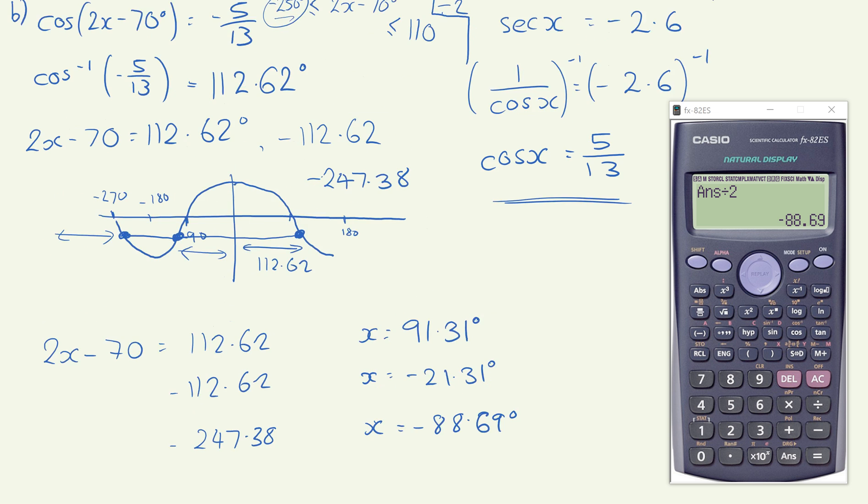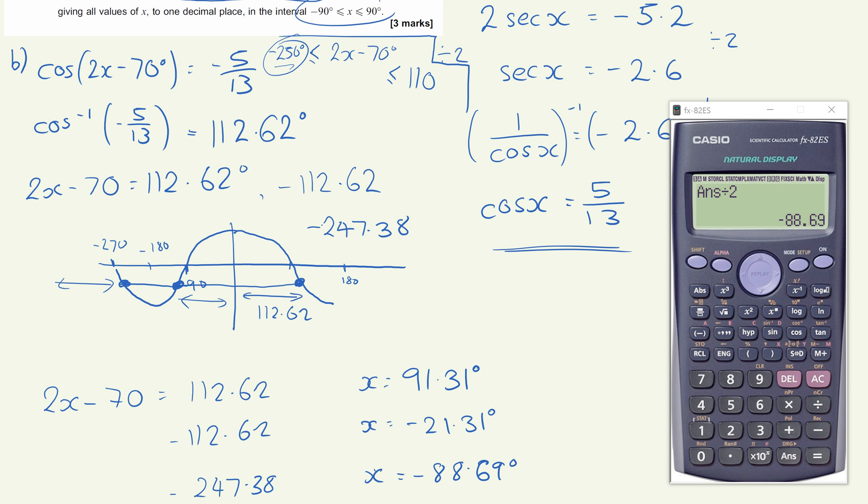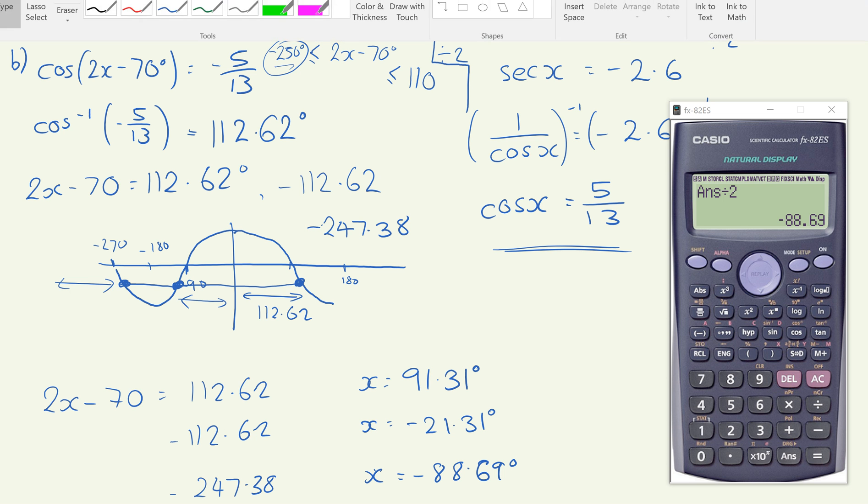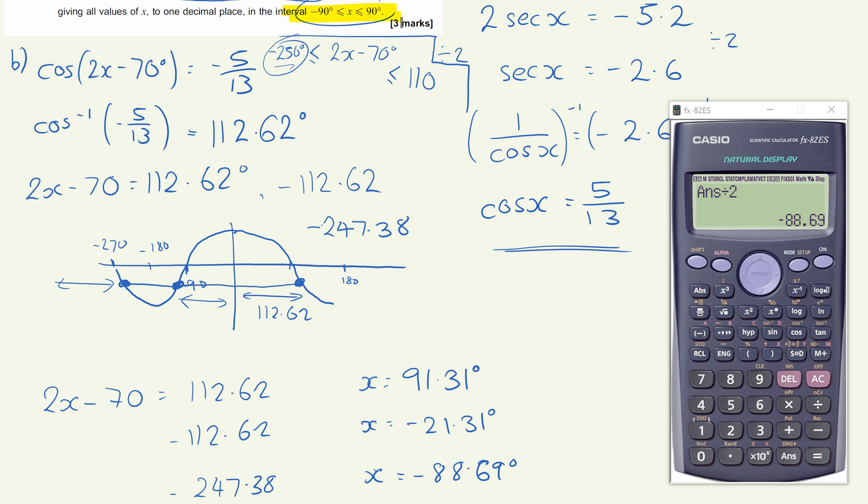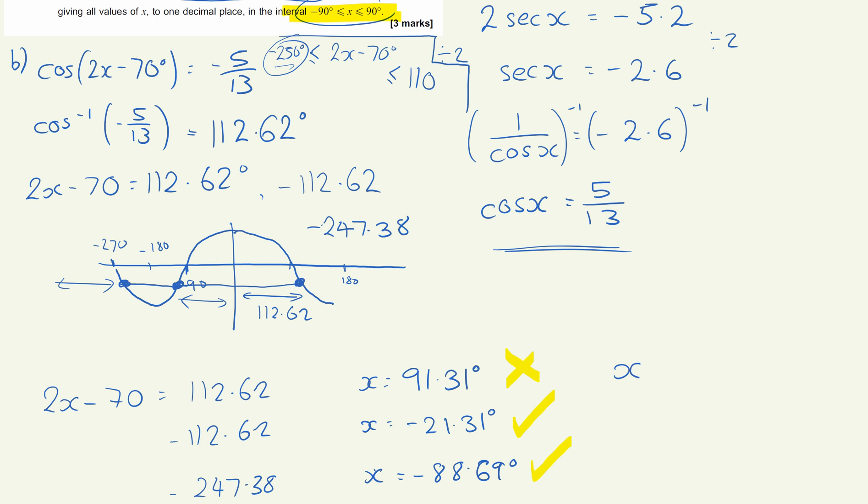Now just scrolling back up to the question, we can just see at the top of the page there, there's a highlight cover up, that we're looking for that interval. So this solution's okay, this solution's okay, this solution's not in the interval. So what we're going to conclude then, remove the calculator, is that x is either equal to minus 21.3 degrees to one decimal place or minus 88.7 degrees, both rounded to one decimal place there. And that's the final solution to part B of that problem.